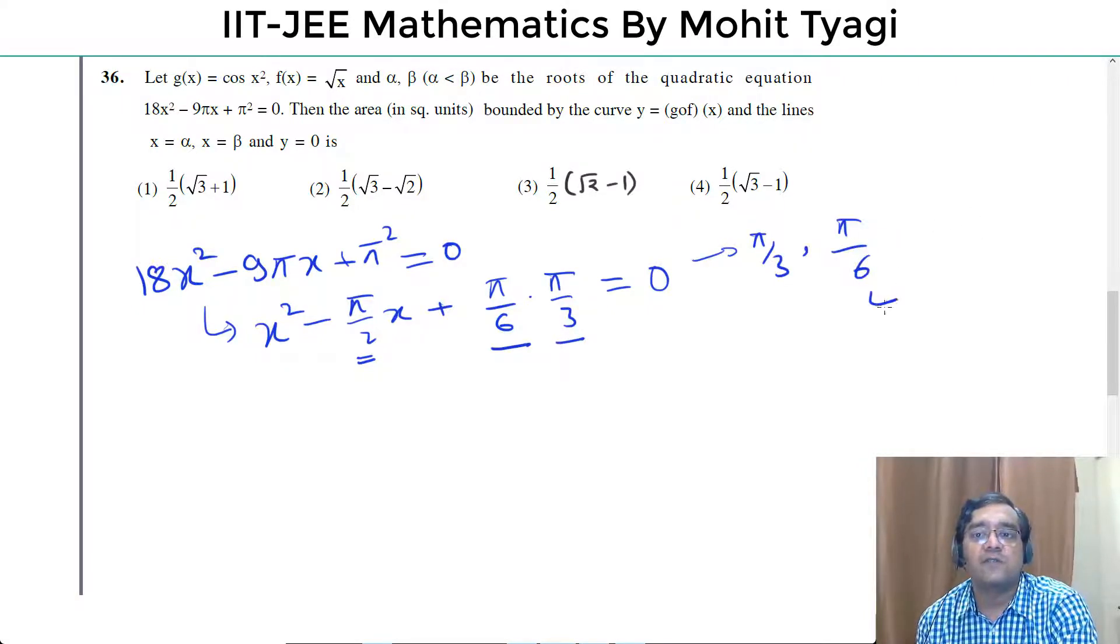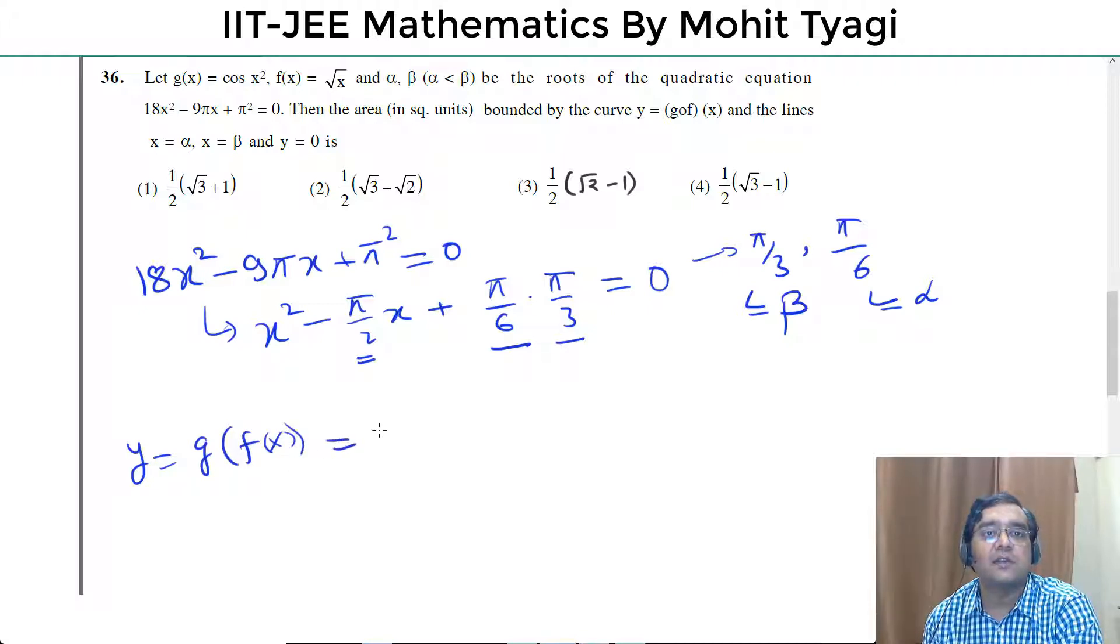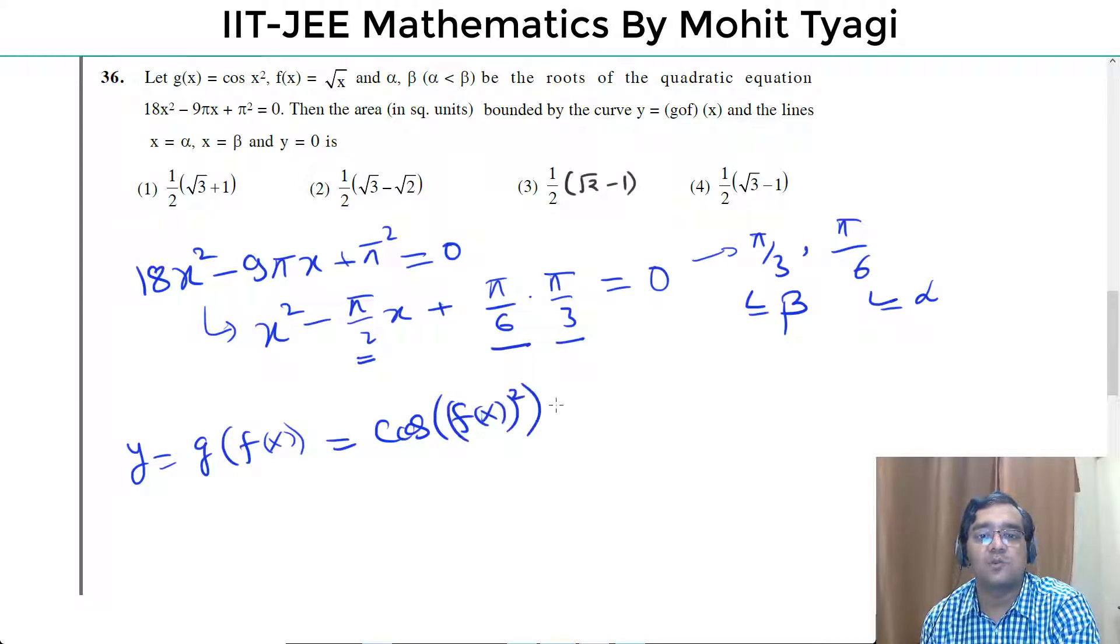The smaller root is alpha and beta. The area in square units bounded by the curve y = g(f(x)). g is cos(x²), so g(f(x))² which is cos(f(x)), which ultimately becomes cos(x).